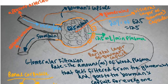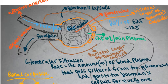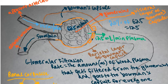Between the podocytes we have filtration slits, and even further we have proteins called nephrin proteins. These nephrin proteins sit between the podocytes of the visceral layer and further prevent any unwanted or large compounds — like red blood cells, white blood cells, or platelets — from passing through into the Bowman's capsule.